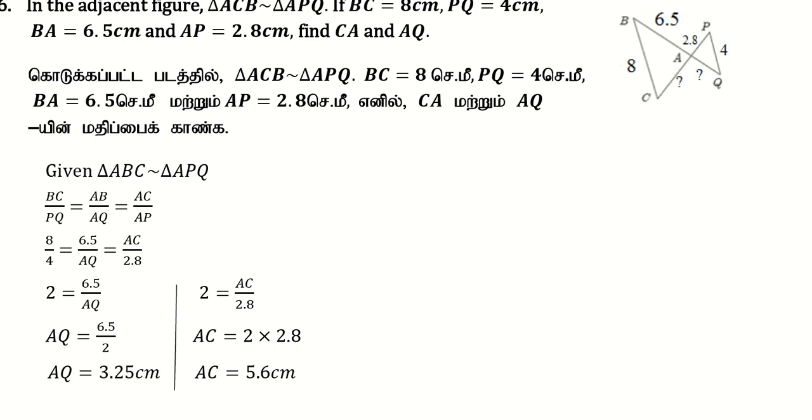I am using this problem with triangle ACB and triangle APQ. BC equals 8cm, PQ equals 4cm, BA equals 6.5cm, and AP equals 2.8cm.